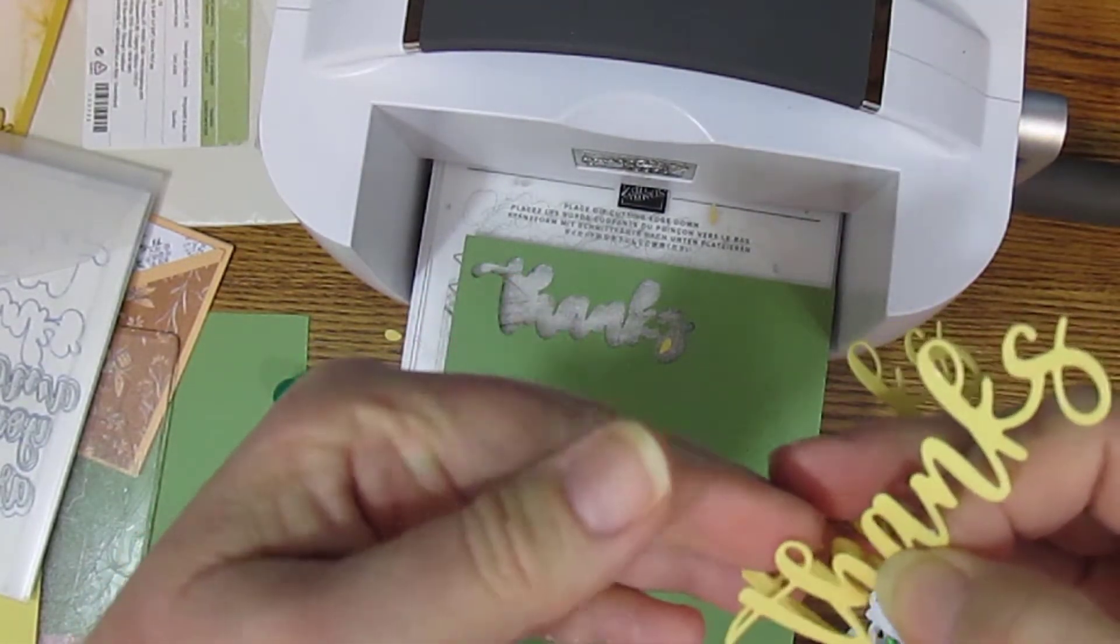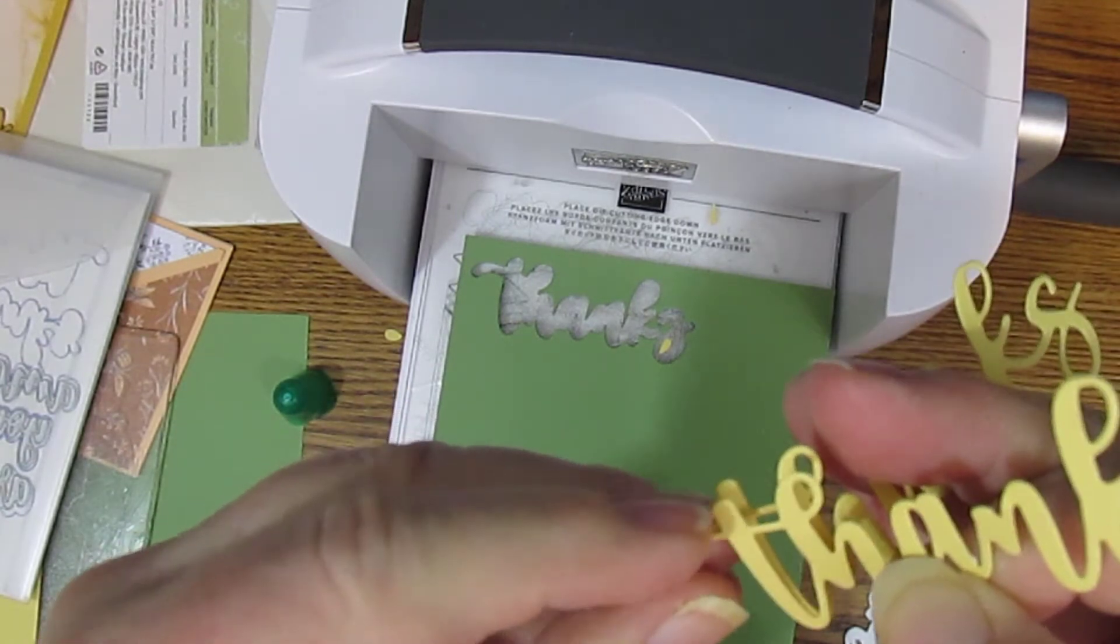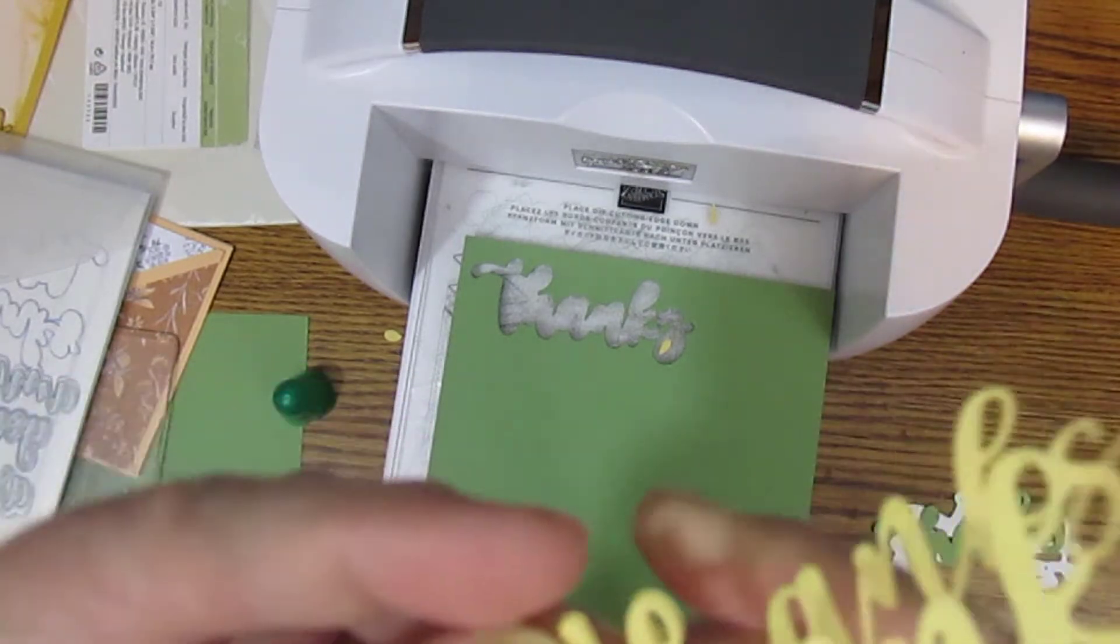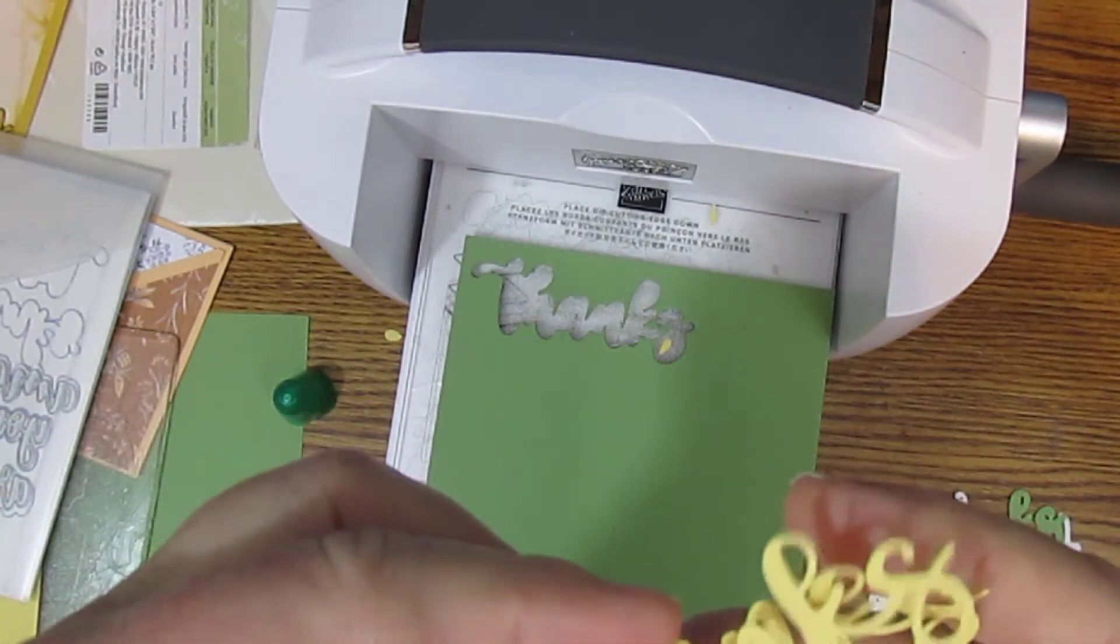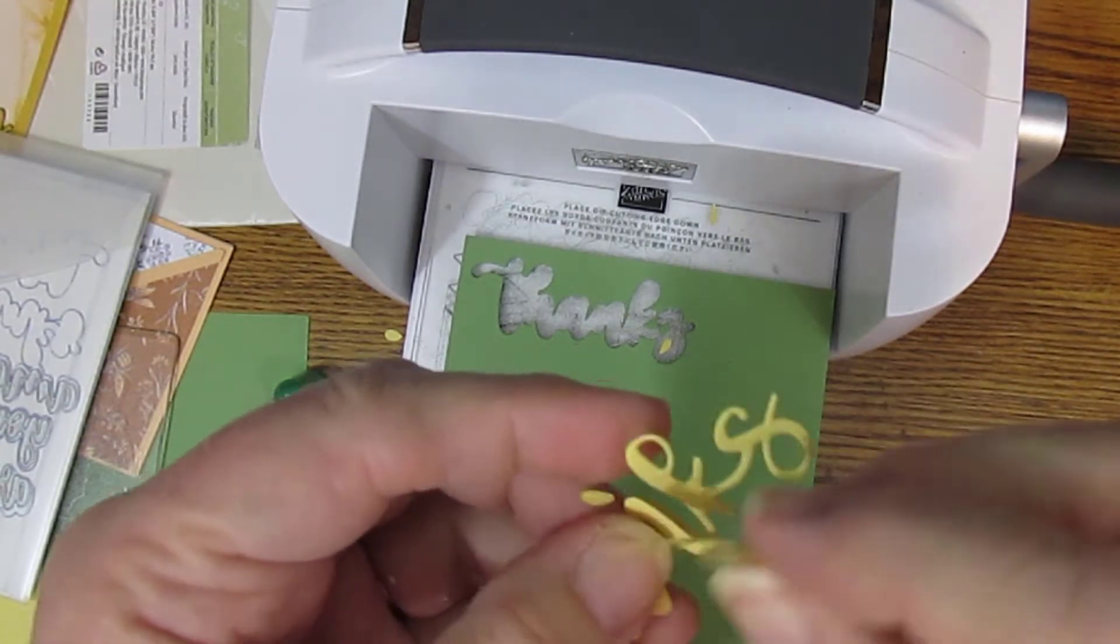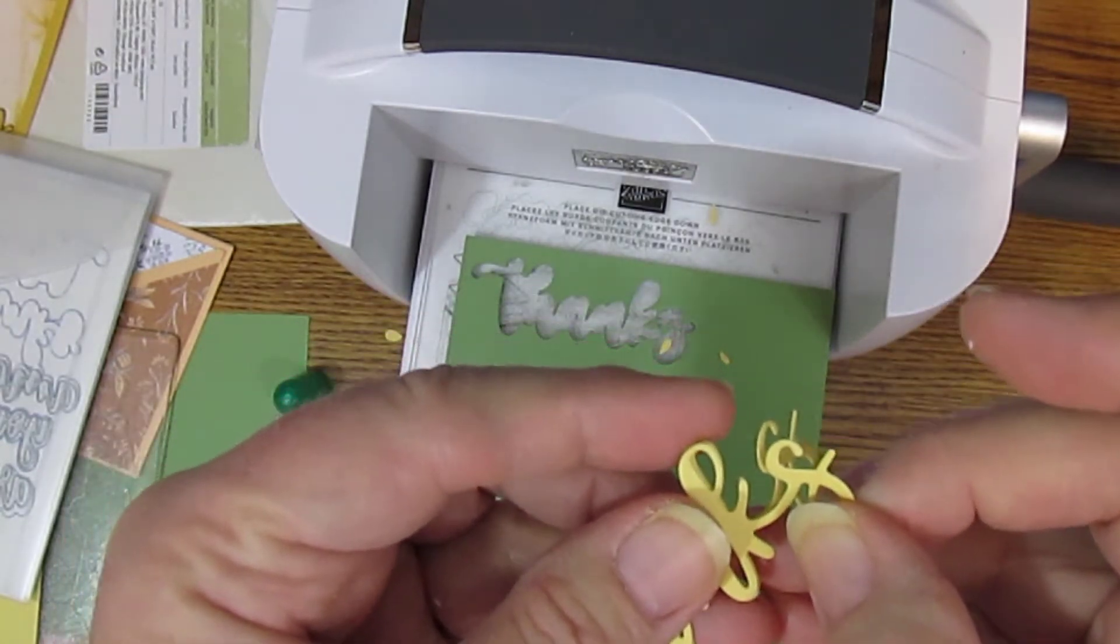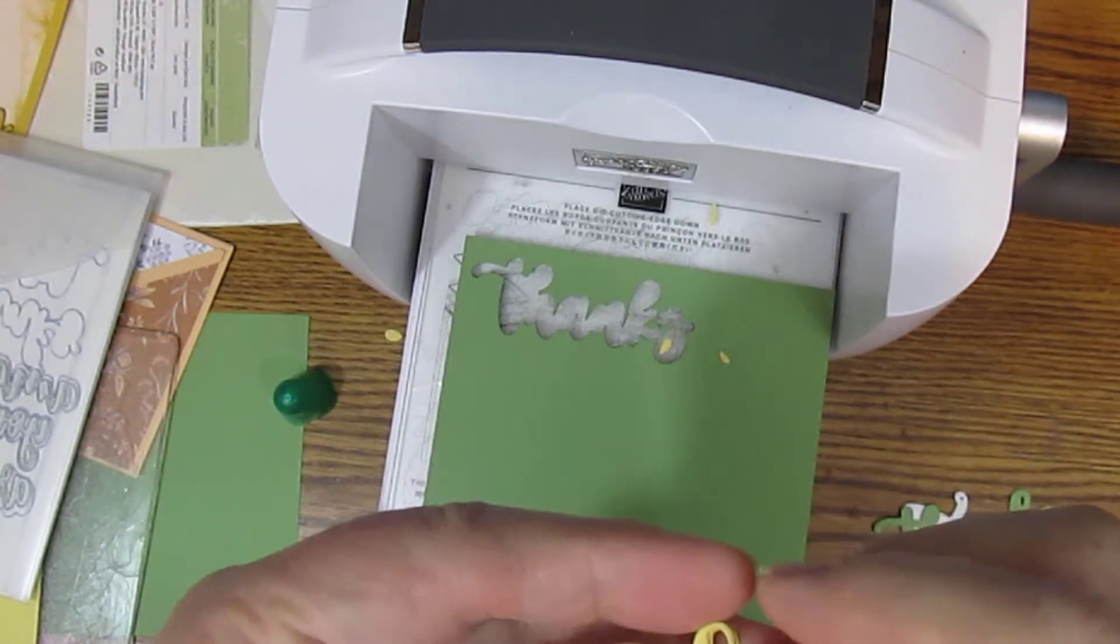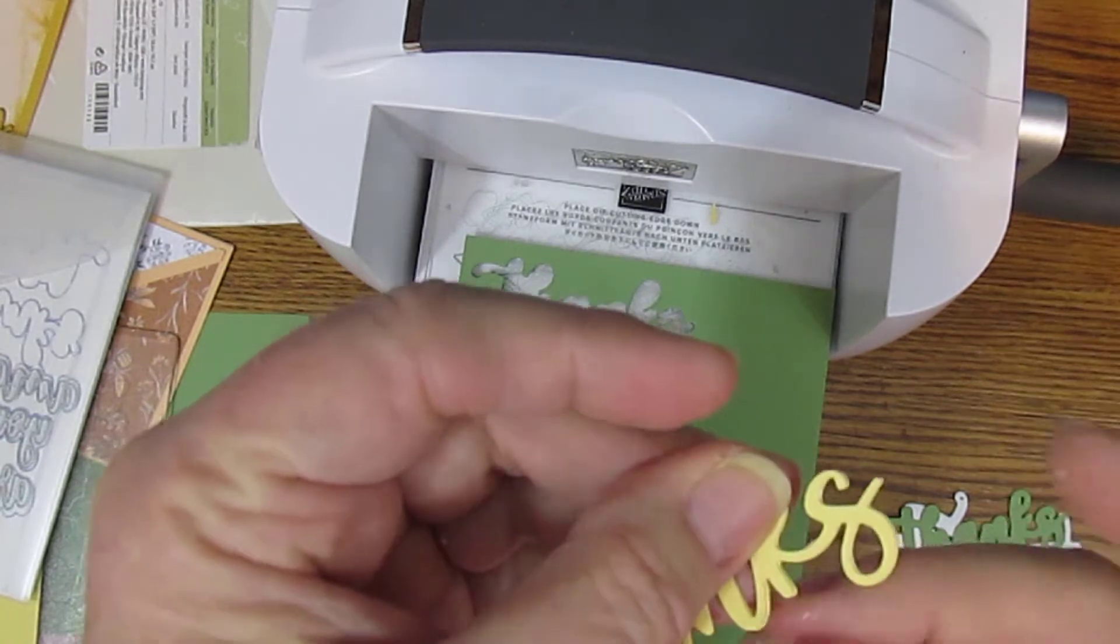Now we will line up the die starting with the one end and hold that in place for a second and then line up the rest. Just scootch it till it lines up.